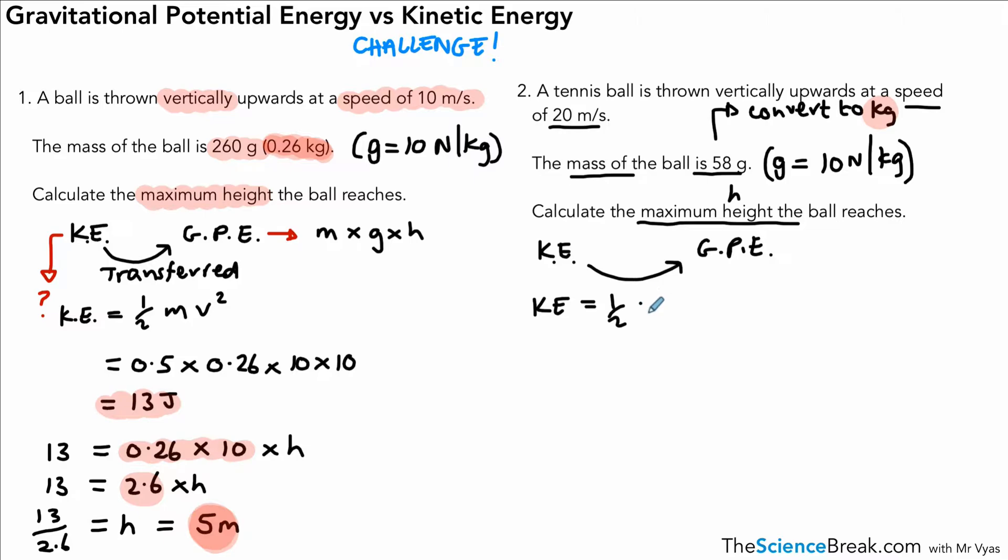So in terms of kinetic energy, again, said it a hundred times, but we need to memorize this formula: ½mv² for kinetic energy. That will give us 0.5 × a mass of 0.058 × 20 × 20. The 0.058 comes from converting the grams to kilograms, which you do by dividing by a thousand, and the 0.5 comes from the half in the equation. So if you work those out, you're going to get an answer of 11.6 joules.